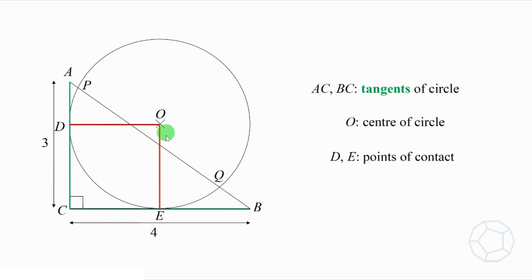If we draw the radii OD and OE, then alpha and beta are 90 degrees. The reason is tangent perpendicular to radius.